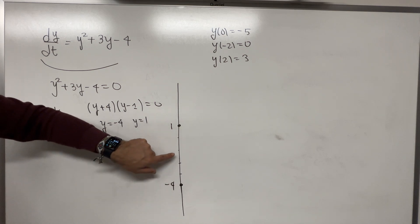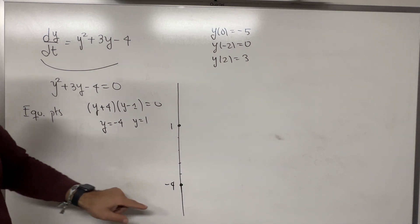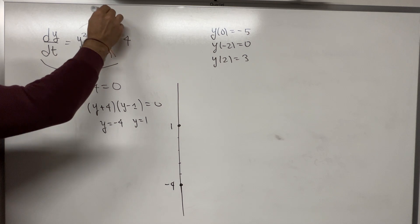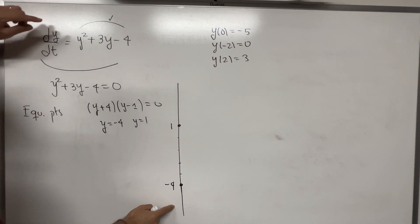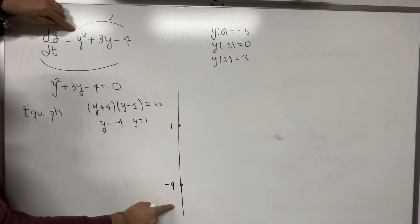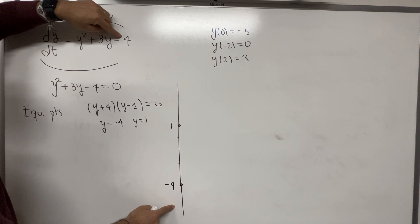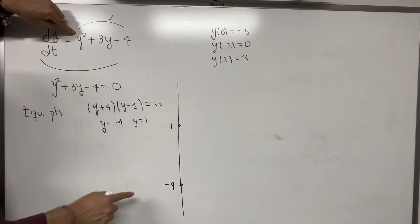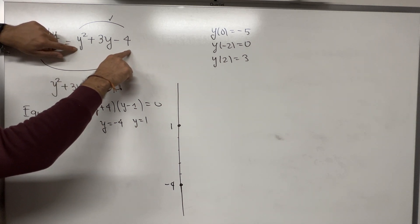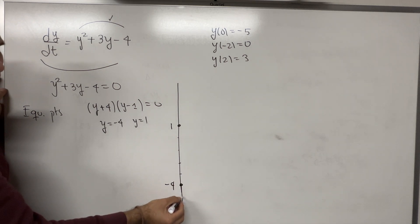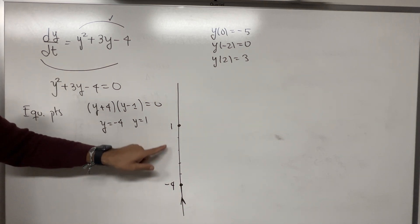We get piece number one, piece number two, and piece number three. In each piece we take a test point and substitute it into the equation. For example, if we pick -5 to represent the first piece, then (-5)² + 3(-5) - 4 = 25 - 15 - 4, which is a positive number. Since it is positive, we draw an arrow going up in this piece.